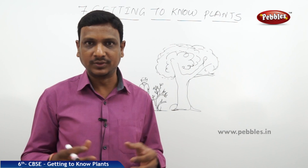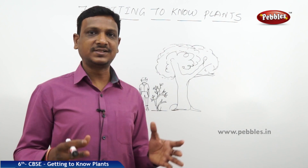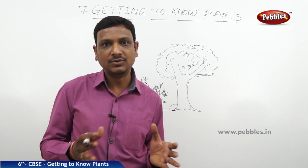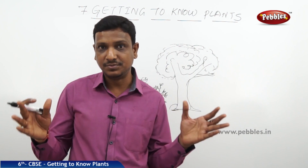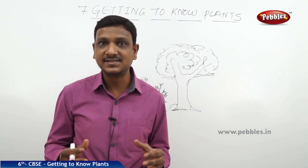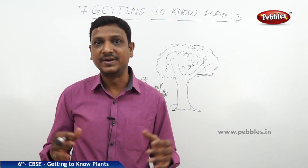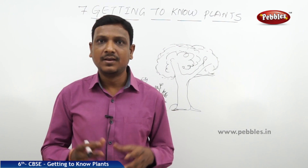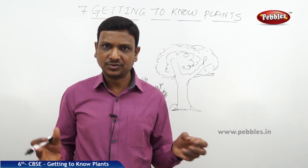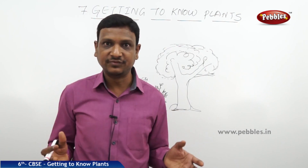Let us explore some important facts about plants. The first thing we are going to see is how plants are grouped. As per their size and appearance, the plants are grouped into three. When you are talking about the size of the plant, you need to compare it with something.